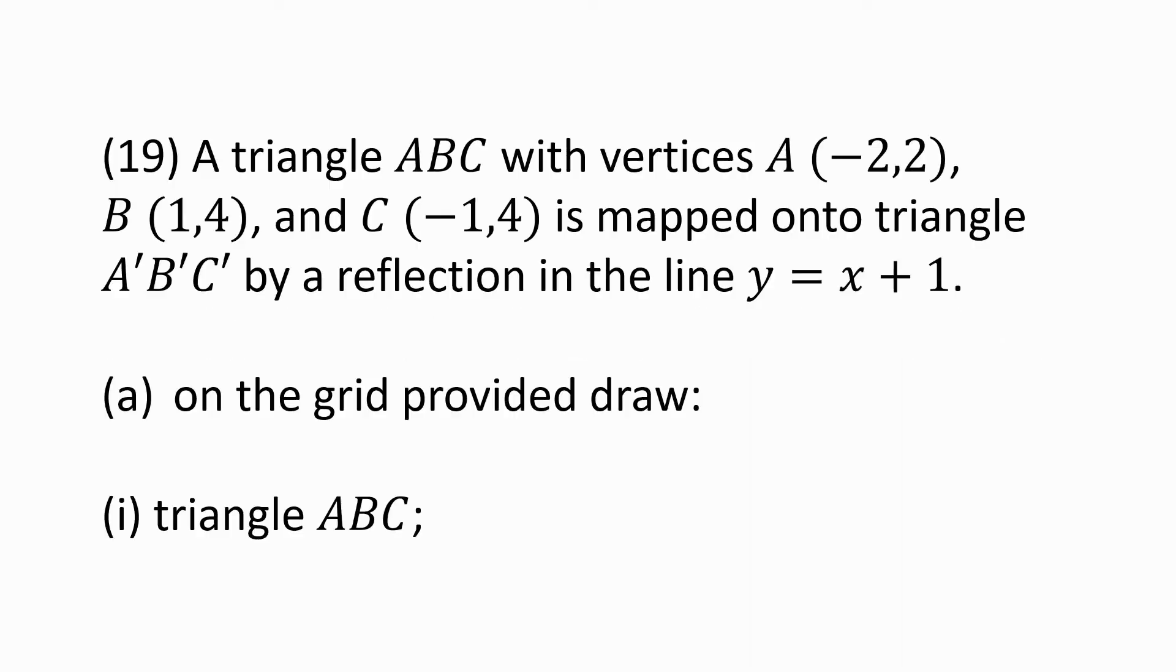Hello and welcome to Number Crunch. In this video we shall focus on question 19 part A. A triangle ABC with vertices A(-2,2), B(1,4), and C(-1,4) is mapped onto triangle A'B'C' by a reflection in the line y equals x plus 1. Part A: On the grid provided, draw triangle ABC.